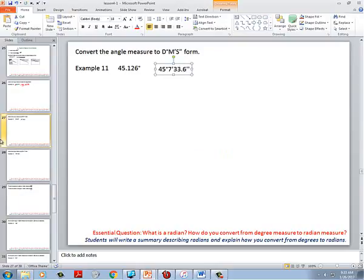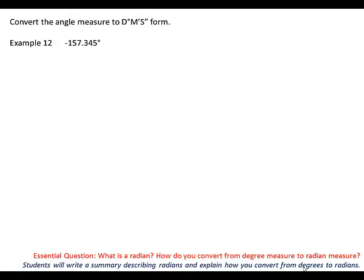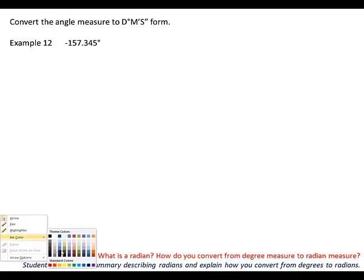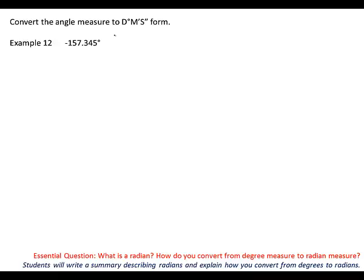There's a second one — everybody practice on your own. Everybody try number 12 right now. Make sure you write it down. It should have been negative 157 degrees. What was your minutes? 20. And your seconds? 42. Can we handle that? That's not too difficult.